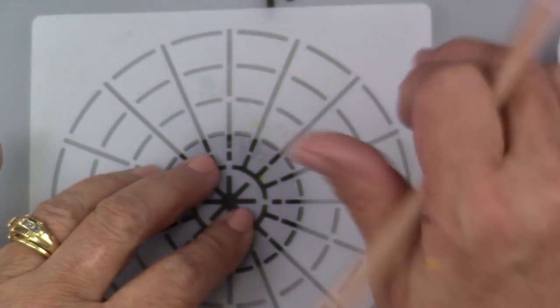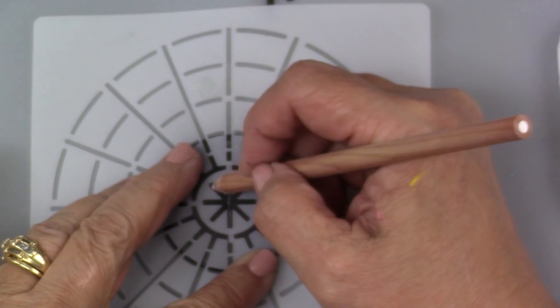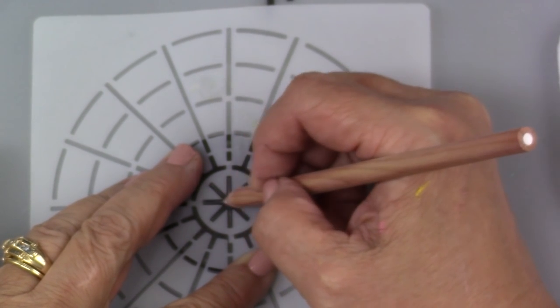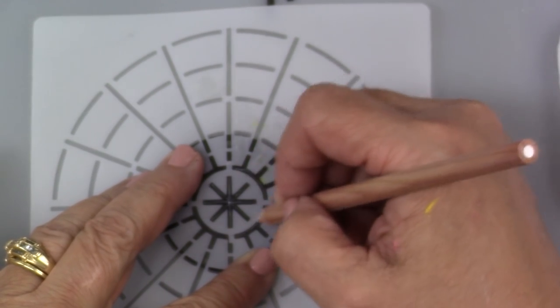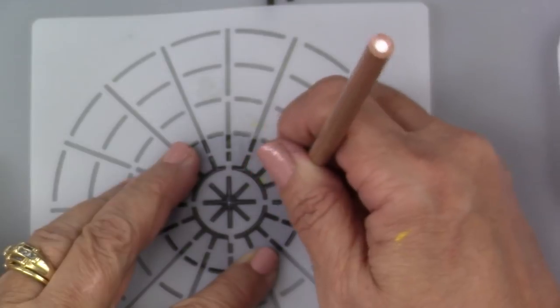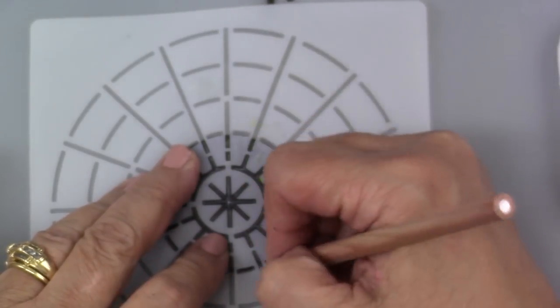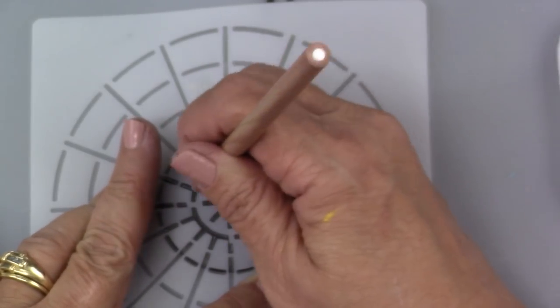Of course I use a general chalk pencil. It's easy to get off. If you use a pencil I have found it more difficult to get it off after I paint, but you could try using an art eraser if you don't have a chalk pencil. These come off easily, or a water soluble pencil would work as well. So just get your marks down, find your center, and we're ready to start painting.